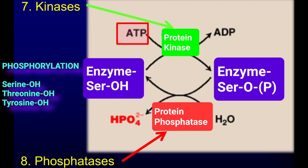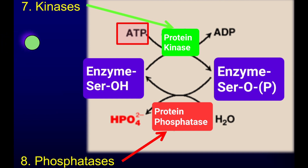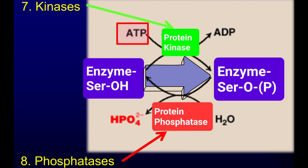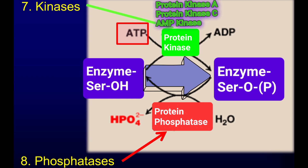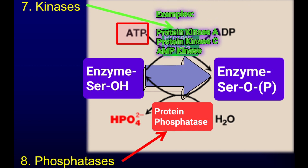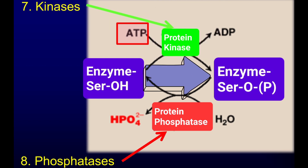The addition of a phosphate is typically accomplished by the action of specific kinases that phosphorylate specific residues within enzymes. For example, phosphorylation of specific serine and threonine residues is catalyzed by several different kinases including protein kinase A, protein kinase C, and AMP kinase.